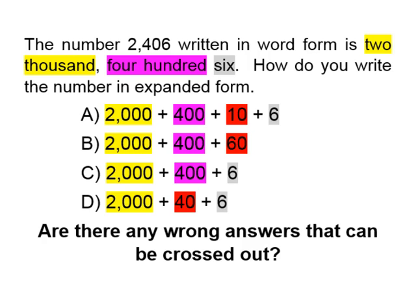Let's look at B. Yes, we do have two thousand — we'll highlight that in yellow. We do have four hundred as well — we'll highlight that in pink. But we don't have sixty. Our number says six, so we highlight sixty in red because that's incorrect. Our answer should not have a sixty in it.